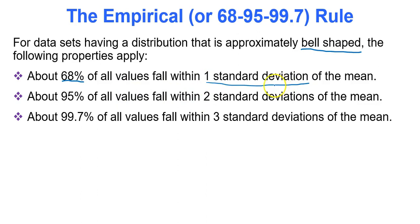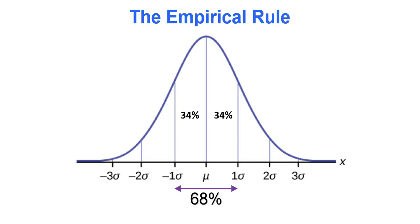95% of all data values will fall within two standard deviations of the mean, and then 99.7%, approximately 99.7% of all data values will fall within three standard deviations of the mean. So what does this mean exactly? Well let's do this by talking about a picture.